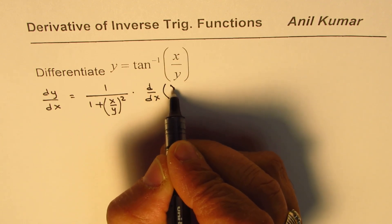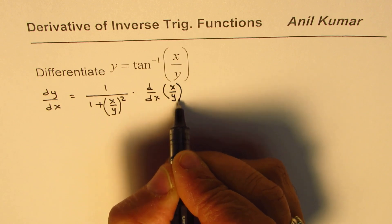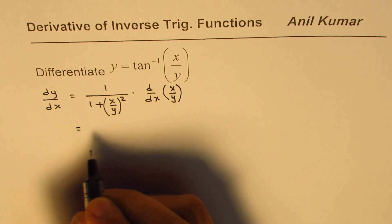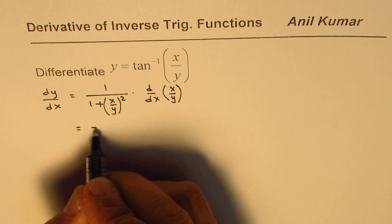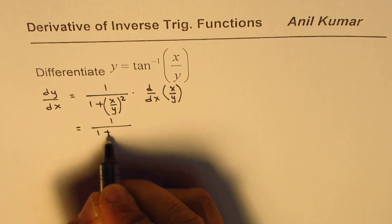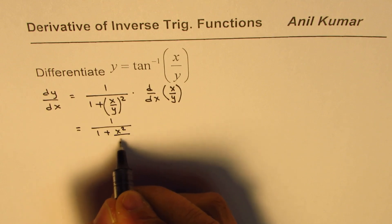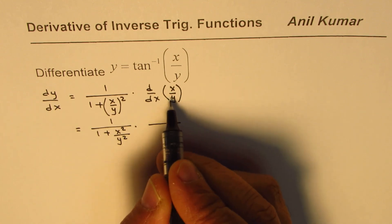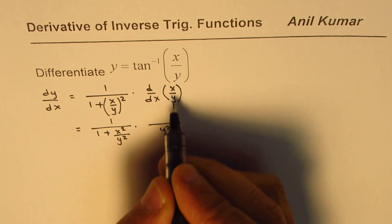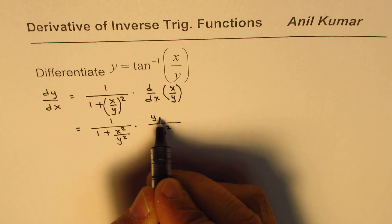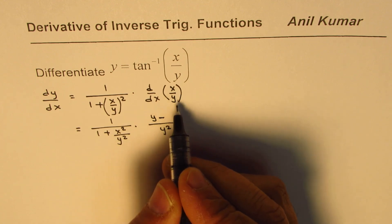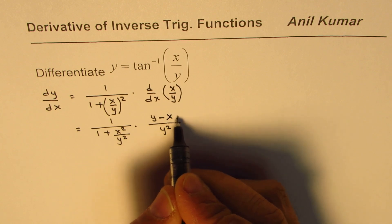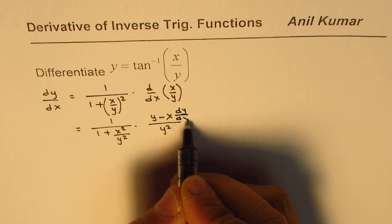Now this could be written as 1 over 1 plus x squared over y squared, and we'll apply the quotient rule here, which will be y squared. The derivative of x is 1 times y, minus x times the derivative of y, which is dy/dx.